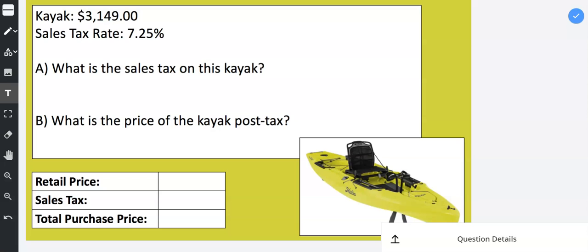The sales tax rate is 7.25%. So I'll type 7.25% of the retail price. Then I'll write 7.25% of and the retail price is the $3,149.